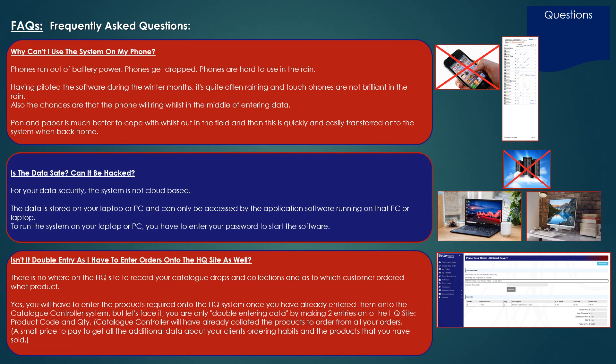Isn't it double entry, as I have to enter orders onto the HQ site as well? There's nowhere on the HQ site to record your catalogue drops and collections and which customer ordered what product. Yes, you'll have to enter the products required onto the HQ system once you've already entered them into Catalogue Controller, but you're only double-entering two items per product — the product code and the quantity. Catalogue Controller will have already collated all the products to order from all of your customer orders, so it's a small price to pay for all the additional information about your clients' ordering habits and the products you have in stock.